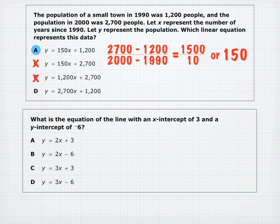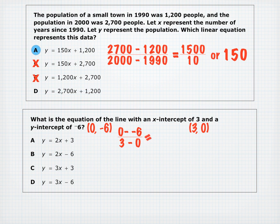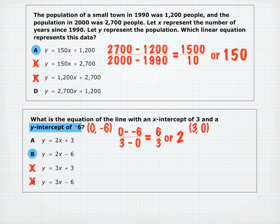What is the equation of a line with X-intercept 3 and Y-intercept negative 6? The X-intercept gives point (3, 0) and the Y-intercept gives point (0, negative 6). Slope: (0 minus negative 6) over (3 minus 0) equals 6 over 3 equals 2. Eliminate C and D. The Y-intercept is negative 6, so the answer is B: Y equals 2X minus 6.